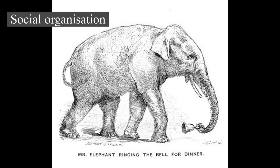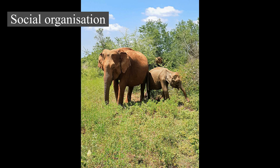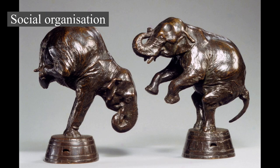Male elephants can be quite sociable when not competing for dominance or mates and will form long-term relationships. A dominance hierarchy exists among males, whether they range socially or solitarily. Dominance depends on age, size, and sexual condition, and when in groups, males follow the lead of the dominant bull. Young bulls may seek out the company and leadership of older, more experienced males whose presence appears to control their aggression and prevent them from exhibiting deviant behavior. Adult males and females come together for reproduction.